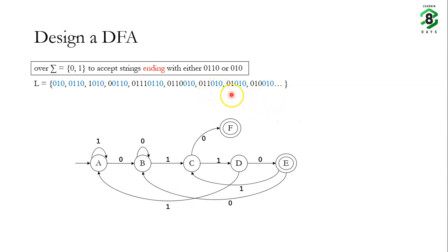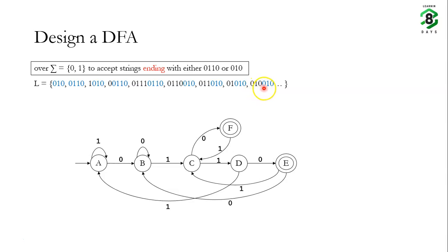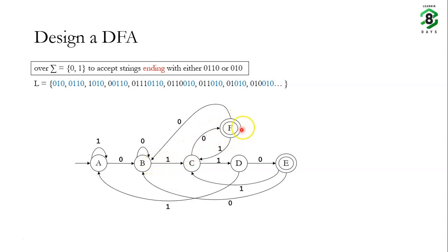Now for state f: being in state f means we have already received 010. If we receive a 1 after that, we can still receive a 0 to complete a string ending with 010, so on state f for input 1 we go to state c. If we receive a 0 in state f, we can then receive 1 and 0 to complete the pattern and reach final state f again, so on state f for input 0 we go to state b.